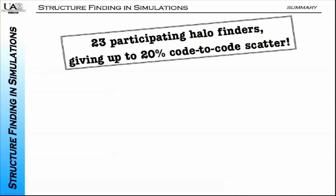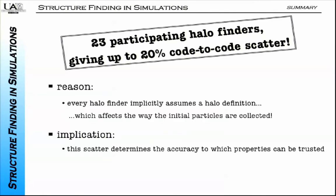All the plots I'm going to show you will basically prove that we have a 20% code-to-code scatter. Whenever you talk about a halo catalog for simulations, if you give me another halo finder on the same simulation, I might get 20% different results. Why is that? It took us a couple of years and a number of workshops and several papers to figure this out. The final reason is that every halo finder makes an intrinsic assumption about how to define a halo.